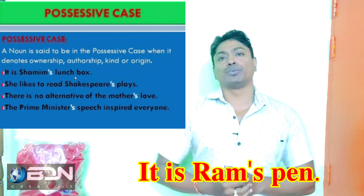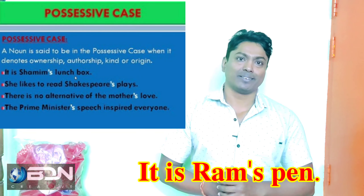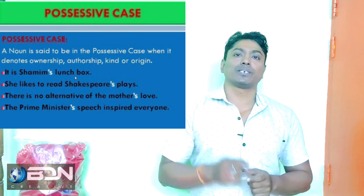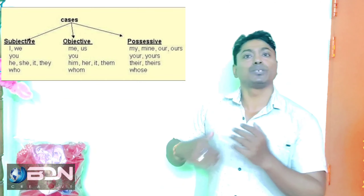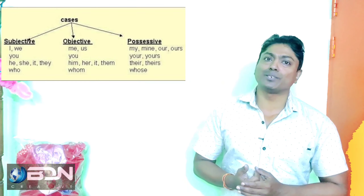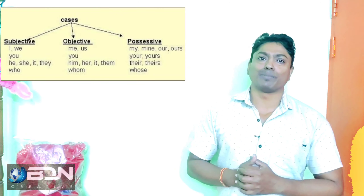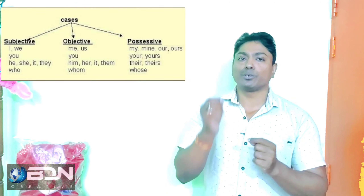So 'Ram's' is in possessive case. For pronouns in possessive case, an apostrophe S is used differently. The pronoun 'I' becomes 'my' in possessive case. 'I' is used as the subject — subjective case. 'Me' is used as the object — objective case. 'My' is used for possession — possessive case. Pronouns like I, we, he, she all follow this pattern.